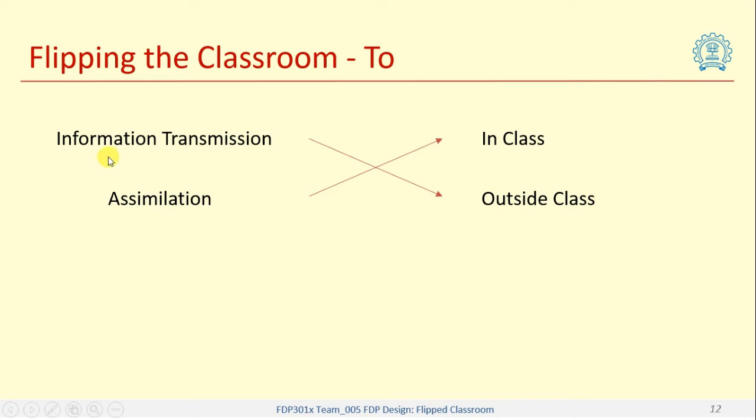So, this is the flipped that is happening over here. Information transmission instead of happening in class that is moved outside the class and assimilation instead of happening outside the class it is moved to the class, in class itself.